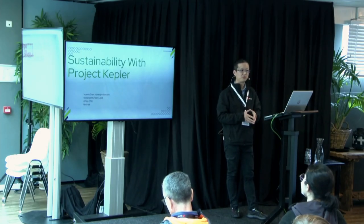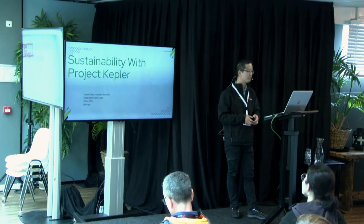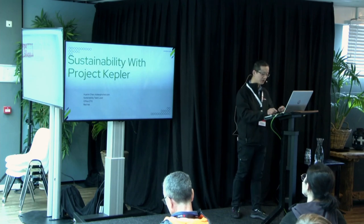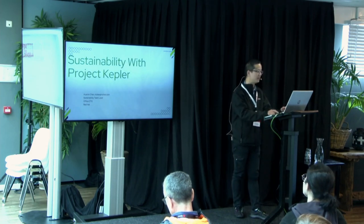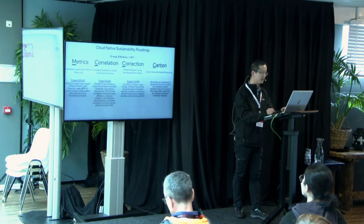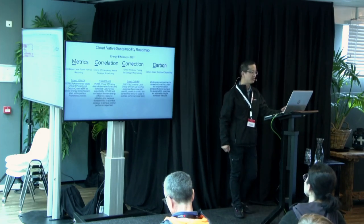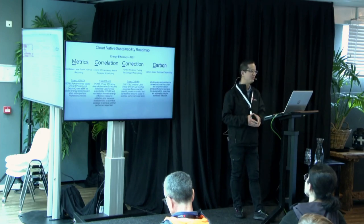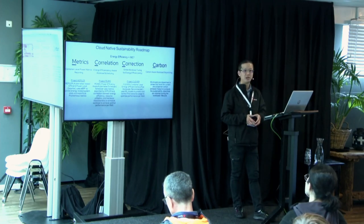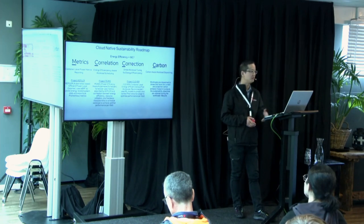My name is Huamin Qian. I come from Red Hat's Office of CTO Emerging Technologies, and I'm working on sustainability at the moment. I used to work on Kubernetes storage. What we call our vision of sustainability at Red Hat's emerging technologies is EMC cube — not to create new functions, but as a framework.